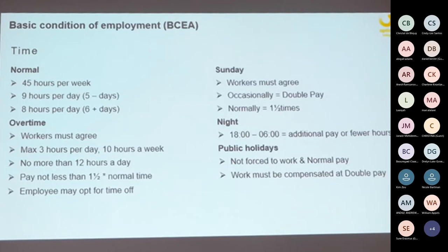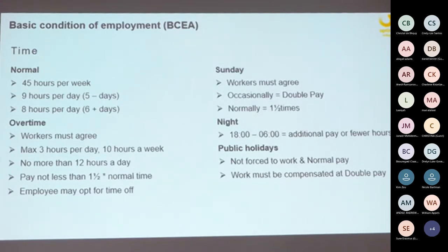When you have a wage, normal time means the normal working hours stated in your employee contract — that is your hourly wage for normal time. You are not permitted to work more than 45 hours normal time during the week. That normal time is split across the days, so they cannot ask you to work 45 hours on end. If you work a five-day working week, your normal time may not be more than nine hours per day.